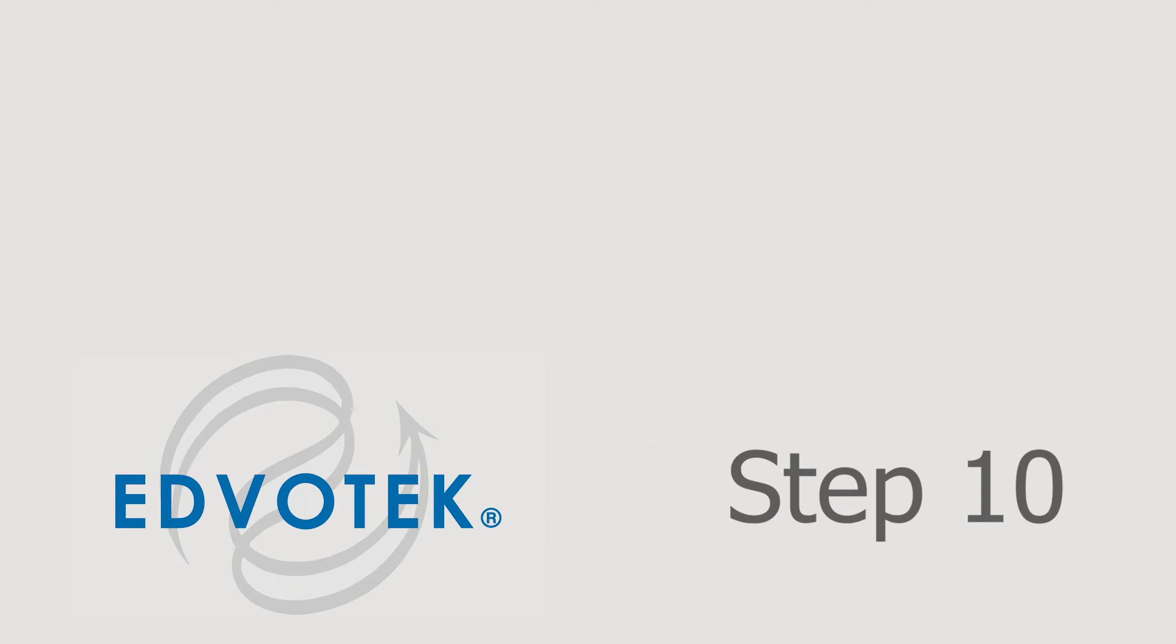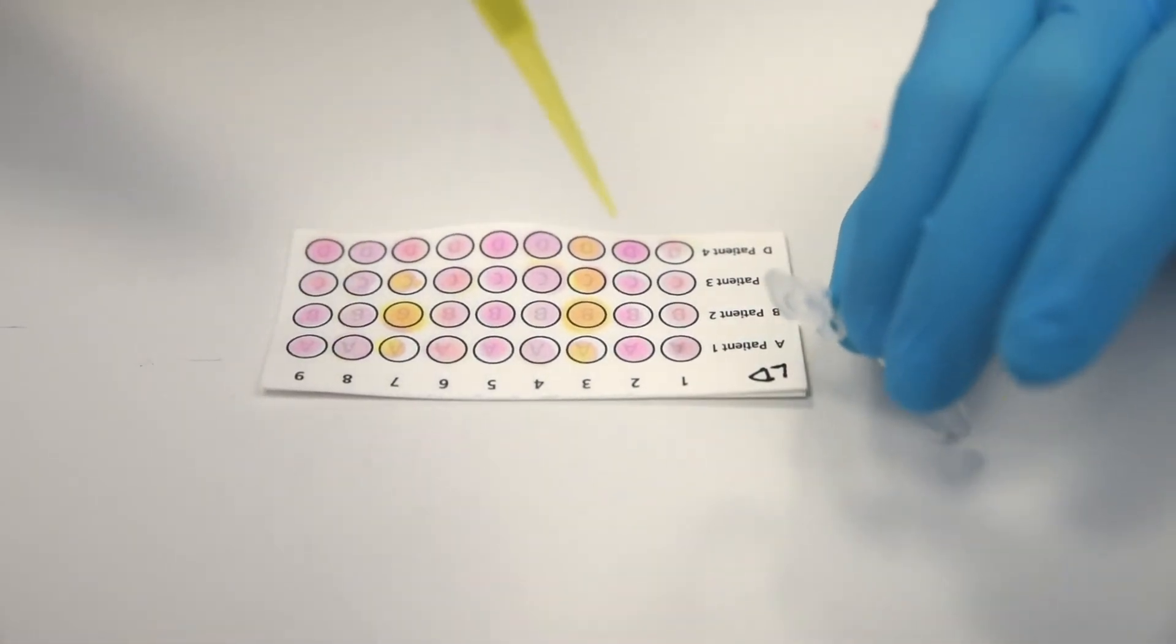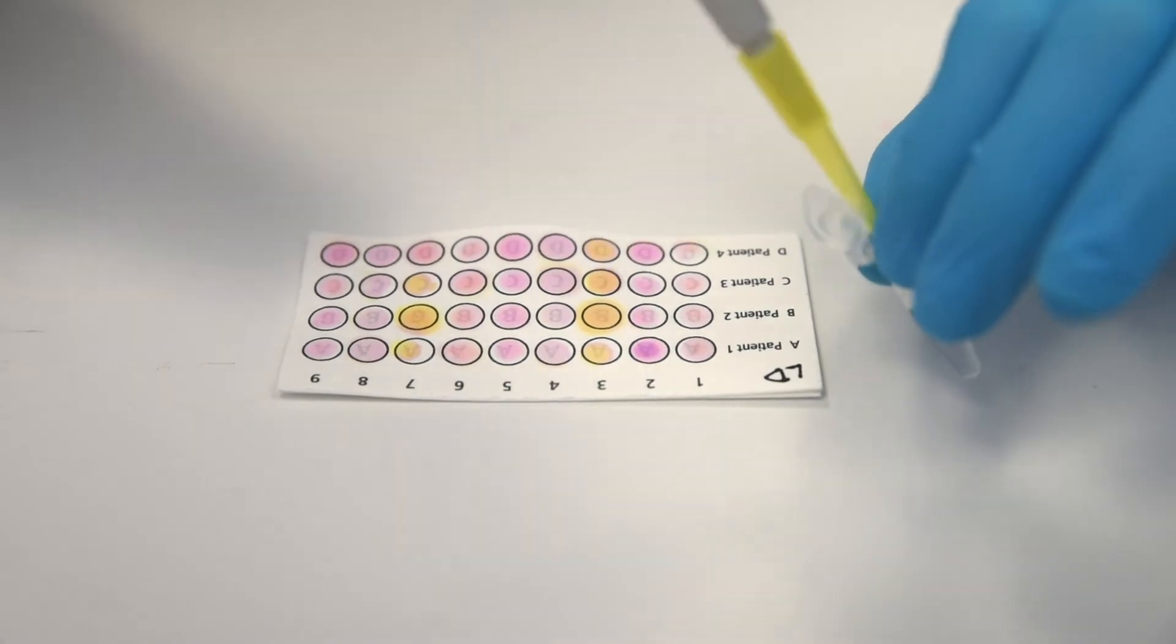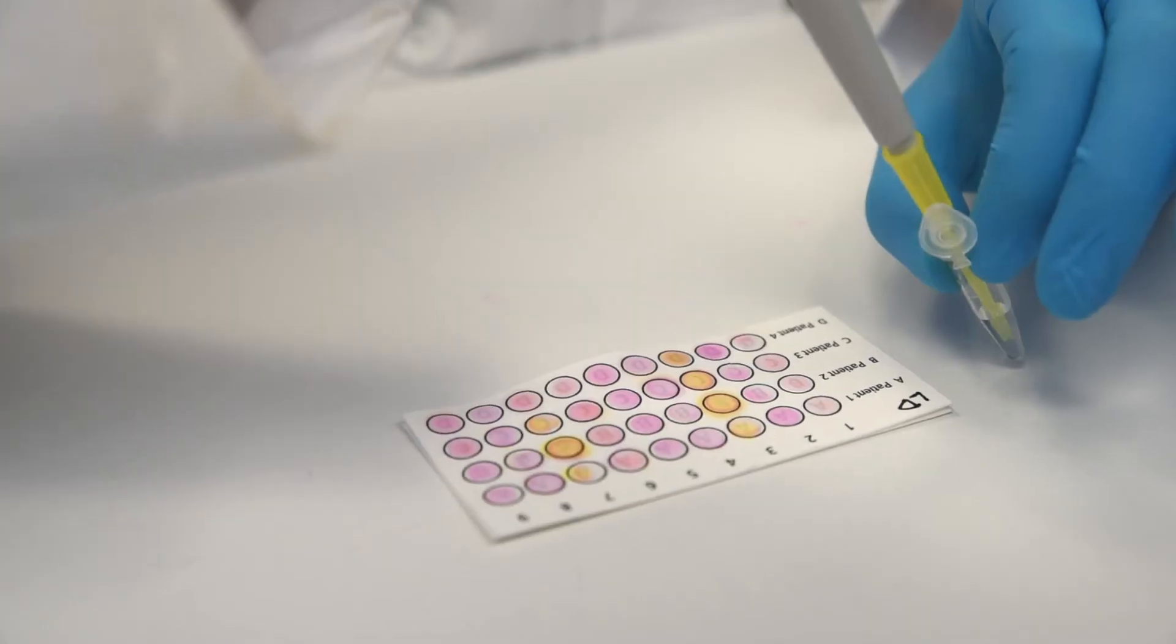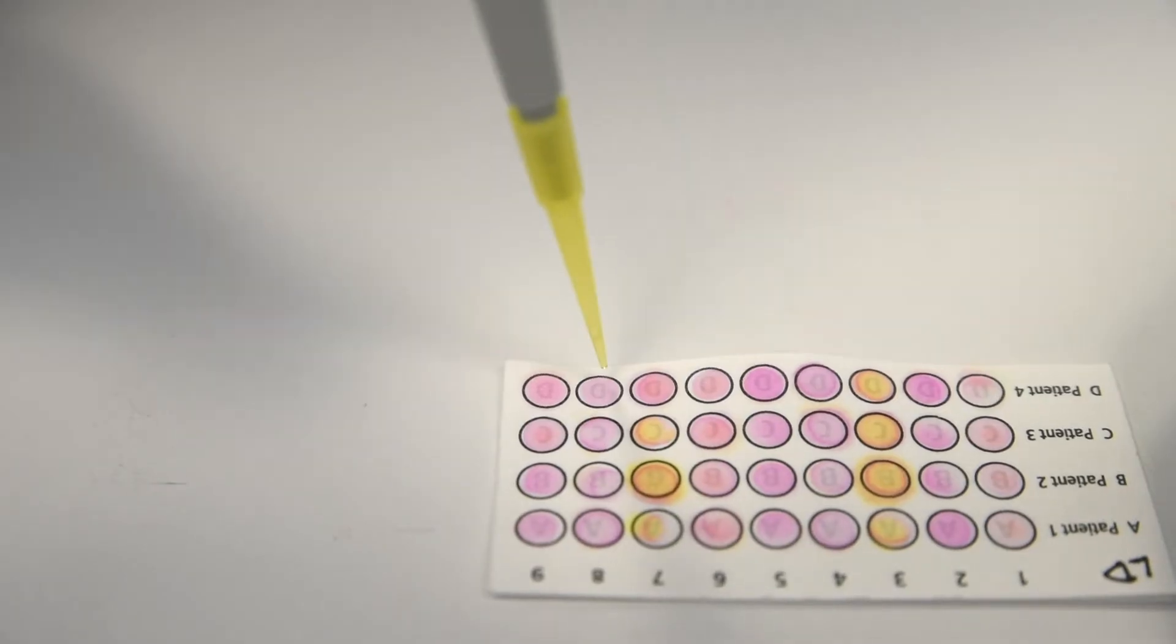Step 10. Apply 5 microliters of hybridization buffer (HB) to each spot on the microarray card. Once again, the same pipette tip can be used to apply buffer to each spot on the entire card.